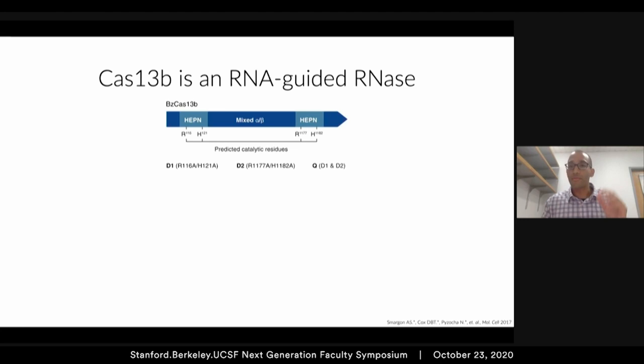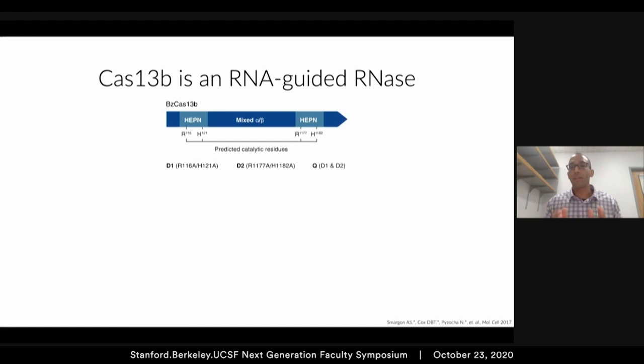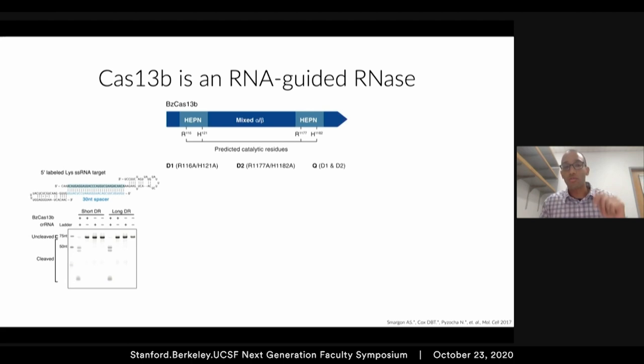In order to recruit ADAR to specific transcripts, we needed a programmable RNA binding protein. For this, we ended up utilizing Cas13b, which at the time was a novel RNA-guided CRISPR enzyme that we discovered through a novel computational search that only relied on the presence of the CRISPR architecture to find new Cas genes. We showed in an earlier study that you could reconstitute the activity of Cas13b in vitro to cleave individual RNA molecules — all it required is a Cas13b protein and the CRISPR RNA, shown in this in vitro cleavage assay.